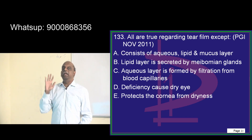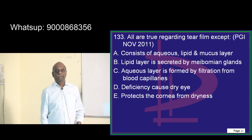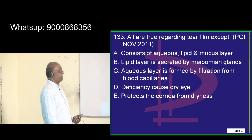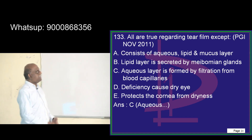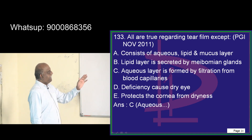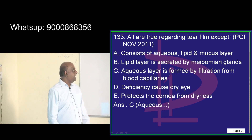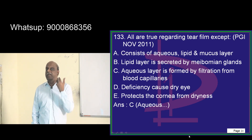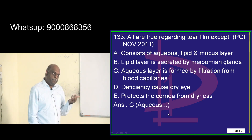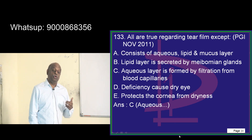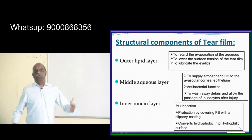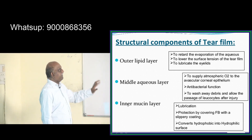Regarding the tear film: what is the constitution of our tears is a very important question. There is an aqueous layer, lipid, and mucus — three layers in the tear. The lipid layer is produced by the meibomian glands. Any deficiency of tear film leads to xerophthalmia, that is, dryness of eyes. The layers are: outer lipid, middle aqueous, inner mucin.